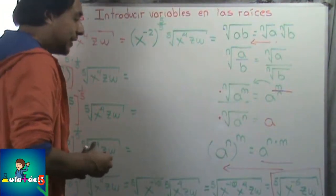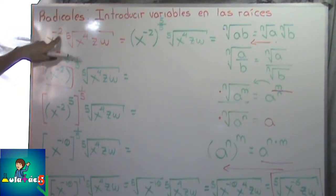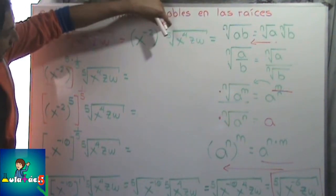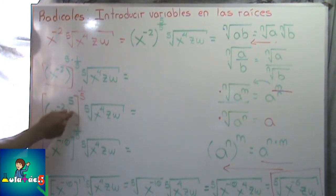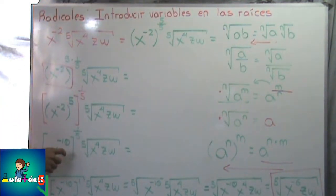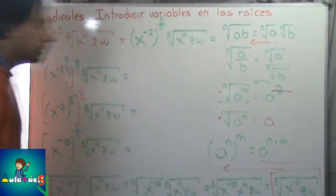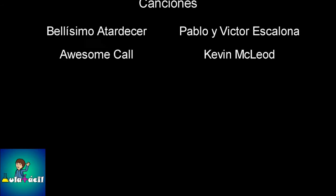Entonces como ven, fue exactamente lo mismo que hicimos en el video anterior, no fue difícil. Aunque la variable de afuera tenga exponentes, se sigue tratando igual — la seguimos escribiendo, le ponemos un exponente fraccionario, separamos, y llegamos a la expresión. Lo único diferente es que como tenemos varias potencias, nada más reducimos lo que teníamos adentro para llegar a un monomio con un exponente fraccionario que podamos convertir a raíz.